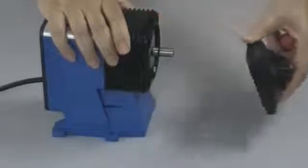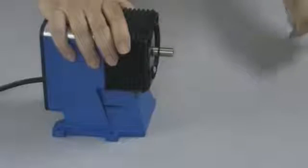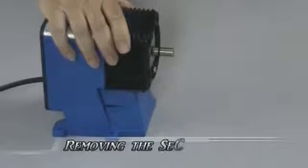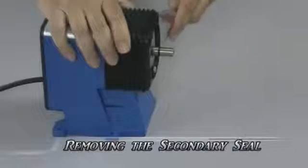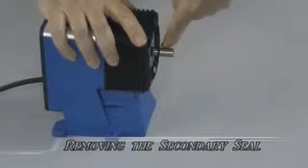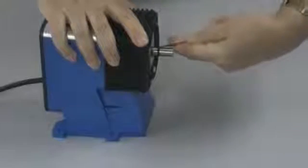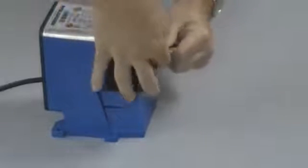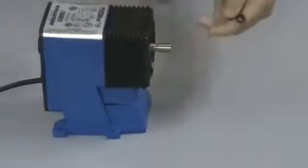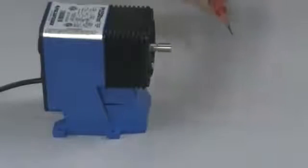Now we are ready to remove the adapter plate. It pulls directly off, away from the shaft. To remove the secondary seal, get a small bladed screwdriver and remove the seal.